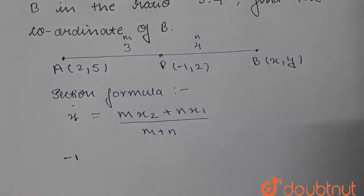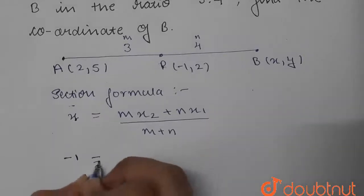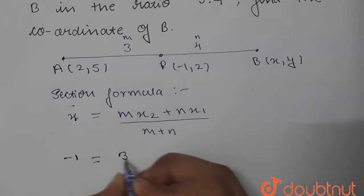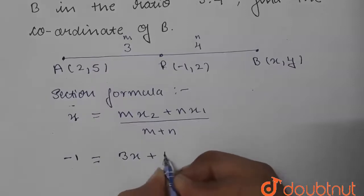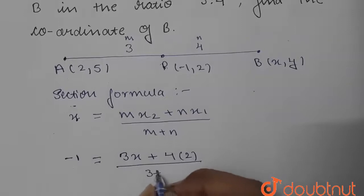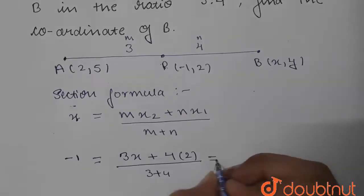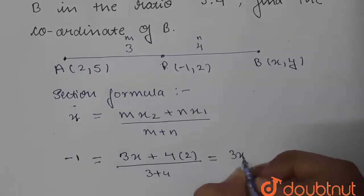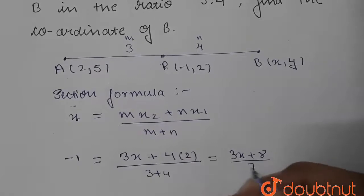This will be (3x + 4×2)/(3 + 4). On simplification, this will be (3x + 8)/7.